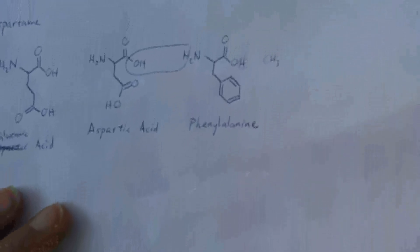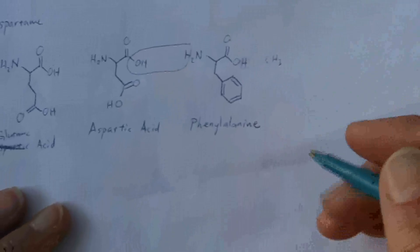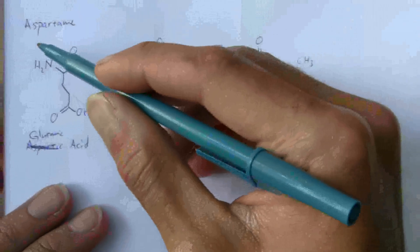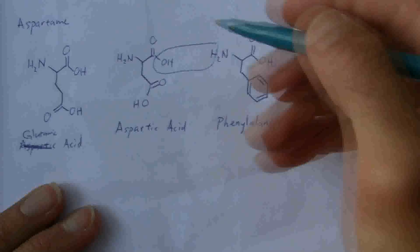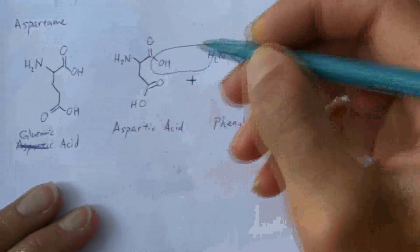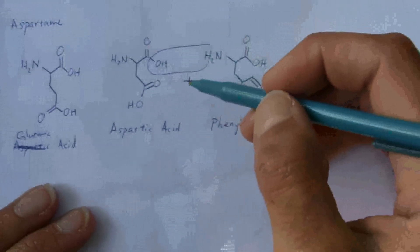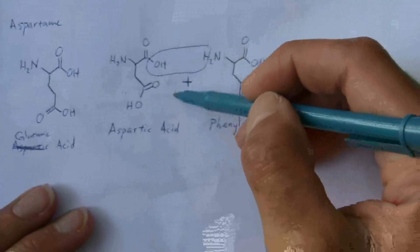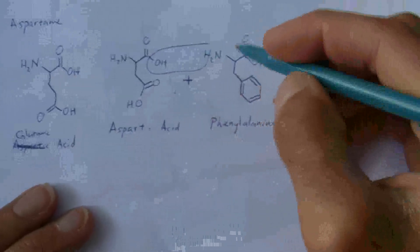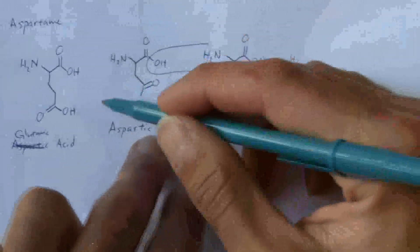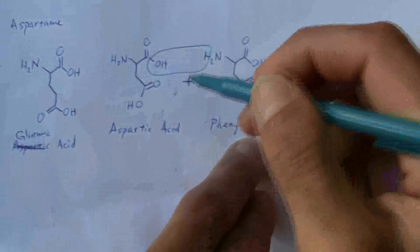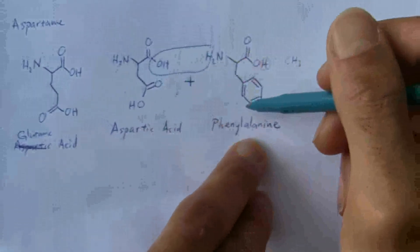So essentially, what you have when aspartame is ingested, it quickly breaks down, very quickly, because this is only one bond. It doesn't take much to break that down into aspartic acid and phenylalanine, two amino acids.